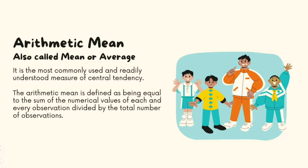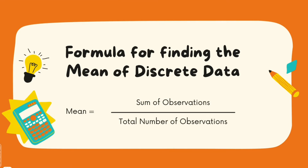What is arithmetic mean? Arithmetic mean is also called simply mean or average — it is the most commonly used and we can easily understand it. Average means the total value divided by the total number. It is equal to the sum of numerical values of each and every observation divided by the total number of observations. We always use averages in our daily lives, whether to calculate your average marks or whatever it is. It is not new to us.